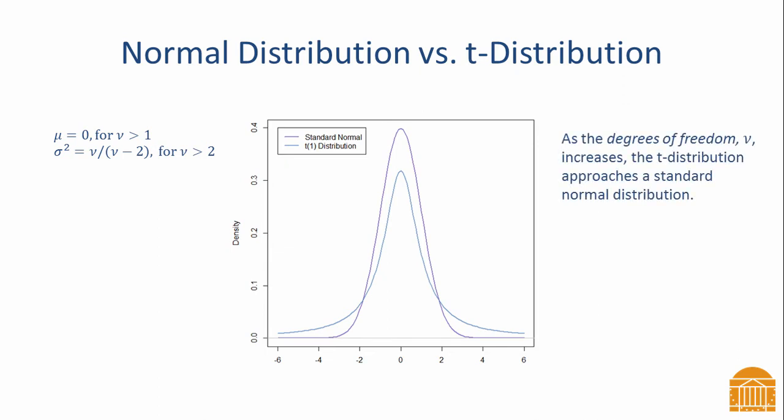Interestingly, the t-distribution becomes more and more like a standard normal distribution as the degrees of freedom increases. To see this effect, watch the t-distribution change as the degrees of freedom changes from 1 to 30.